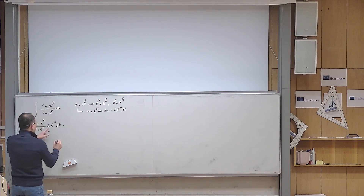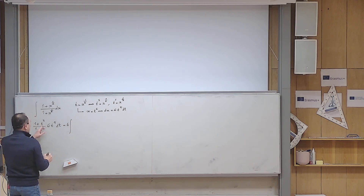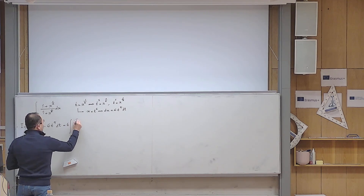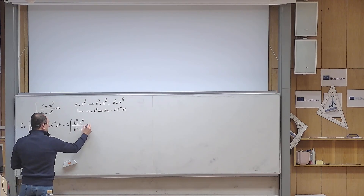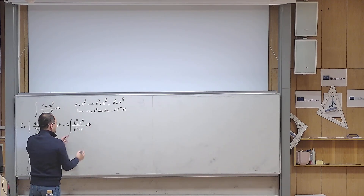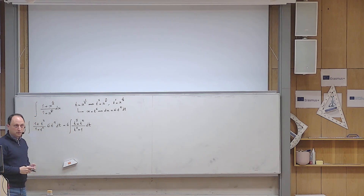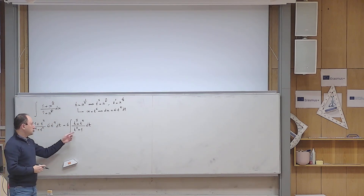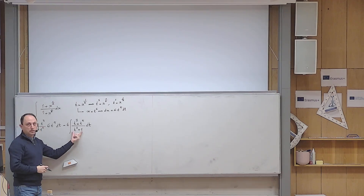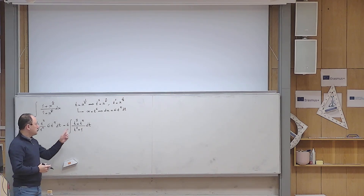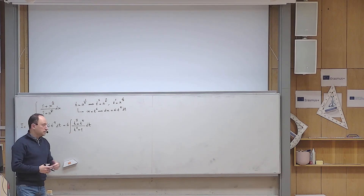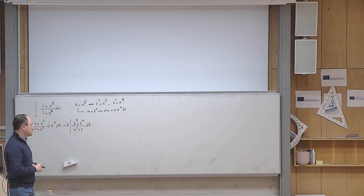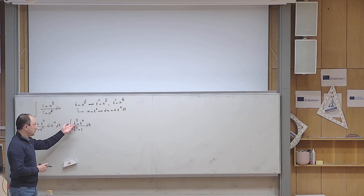If I simplify a little bit, I can pull the 6 out. Multiplying t^5 gives t to the 8 plus t to the power of 5 in the numerator, divided by t squared plus 1. Now, looking at the integrand, it is a rational expression. To solve an integral involving a rational expression, you use the method of partial fractions, but the degree of the numerator must be smaller than the degree of the denominator — which is not the case in our problem.